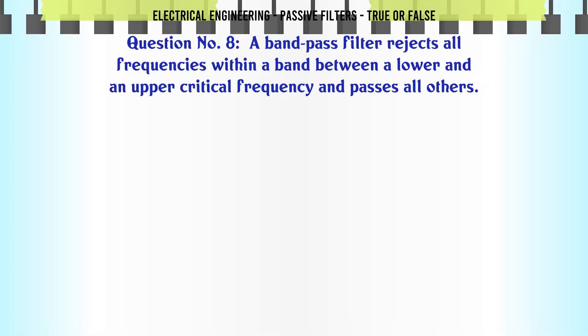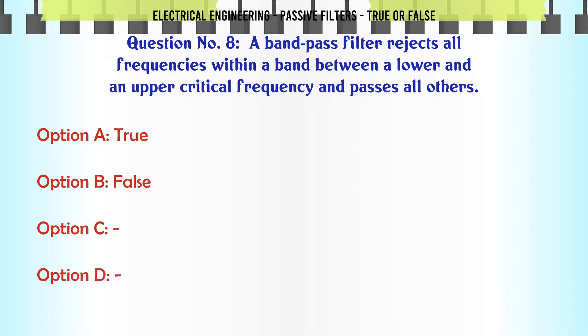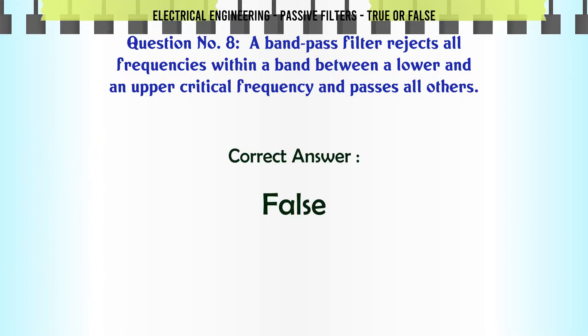A band-pass filter rejects all frequencies within a band between a lower and an upper critical frequency and passes all others. A. True. B. False. The correct answer is: False.